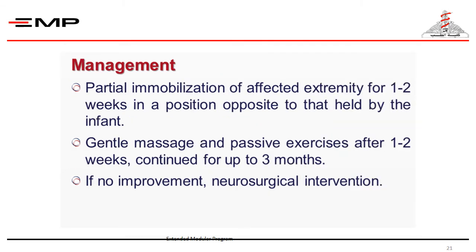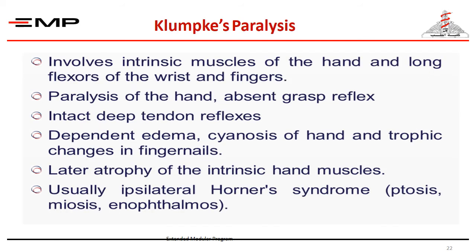Management of Erb's palsy: partial immobilization of the affected arm for one to two weeks, gentle massage and physiotherapy up to three months. After two weeks, if there is no improvement, neurological consultation may be needed. Klumpke's paralysis involves the entire muscles of the hand and long flexors of the wrist and fingers, with absent grasp reflex, intact deep tendon reflexes, and possibly dependent edema, cyanosis of the hand, trophic changes of the fingernails, and later atrophy of the intrinsic muscles. Ipsilateral Horner syndrome may occur.